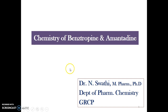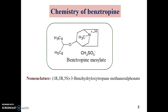In the previous video, we have seen the chemistry of some of the dopaminergic agonists like bromocriptine. In this video, I will be dealing with the chemistry of some more anti-Parkinsonian drugs, like the chemistry of benzotropin as well as amantadine. So, let us first deal with benzotropin.